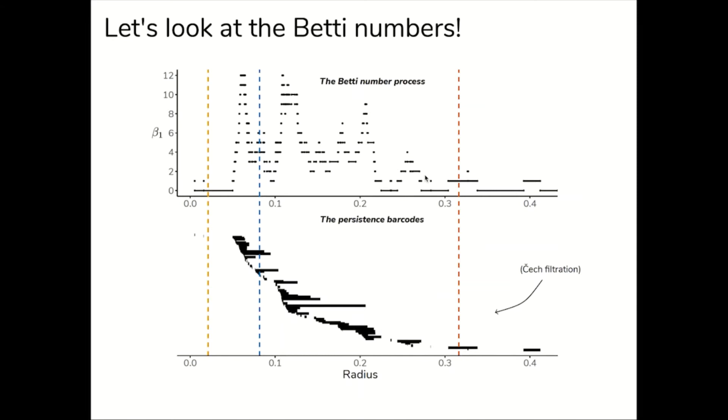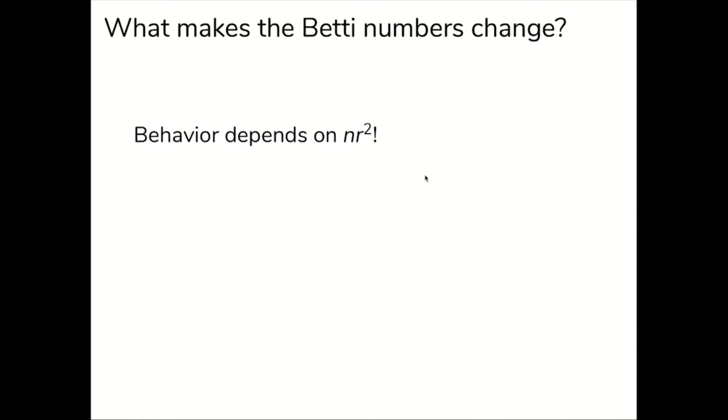Well, as it so happens, the behavior of this phenomenon depends on the value of nr². nr² is roughly the average degree in the random geometric graph that underlies the Čech and Vietoris-Rips complex.